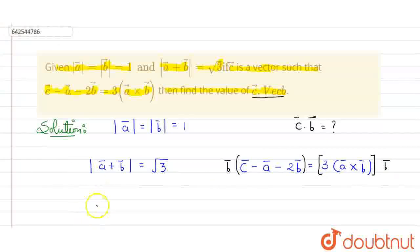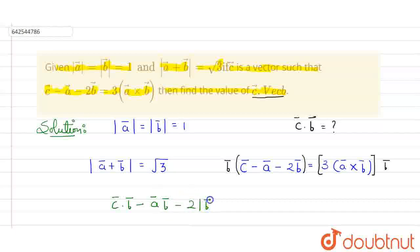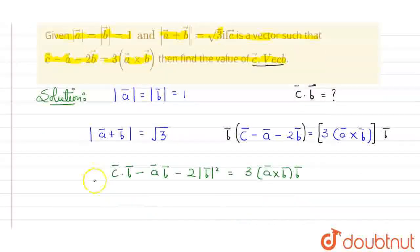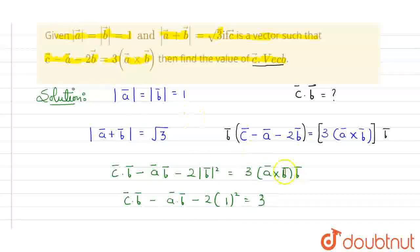Now we have a lead — let's work on it. So here I will get C dot B, minus A dot B, minus 2 times B dot B which is the modulus of B squared. And here it will be 3 times A cross B multiplied with vector B. Now, there is a property of vectors: if you have (A cross B) dot B, this is equal to 0. So this term will be 0 here.